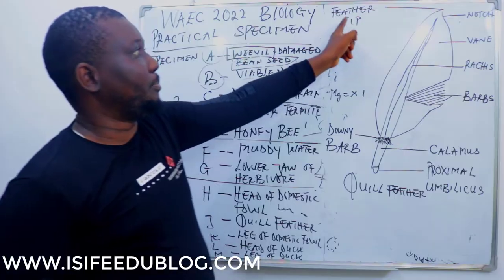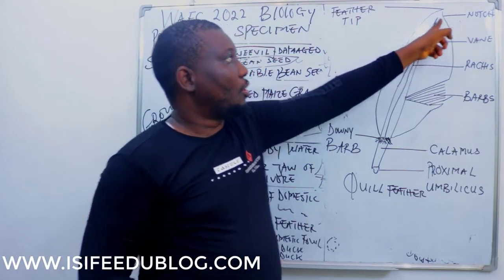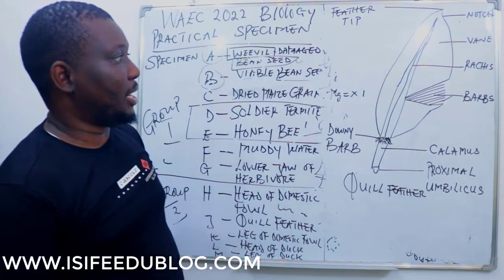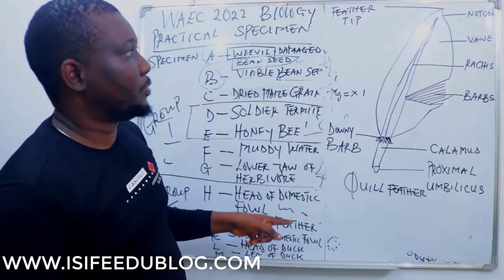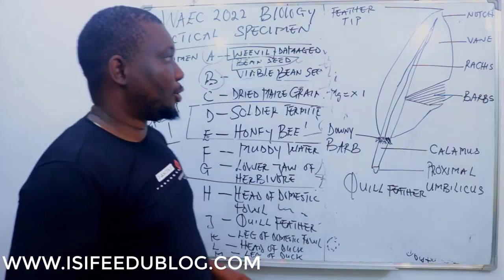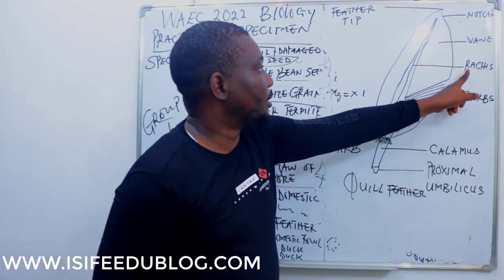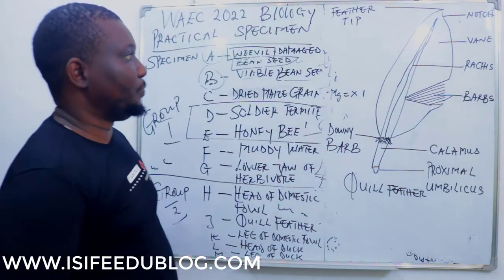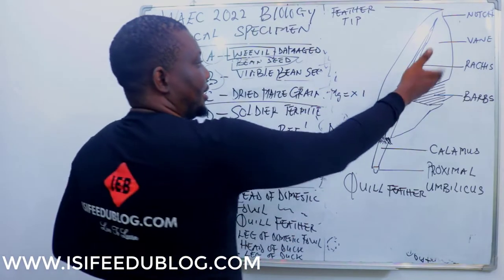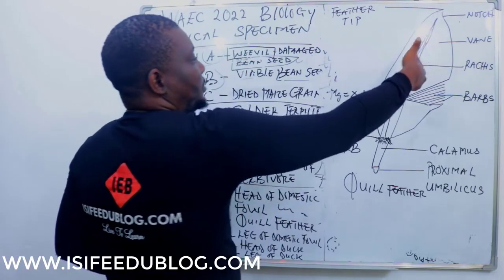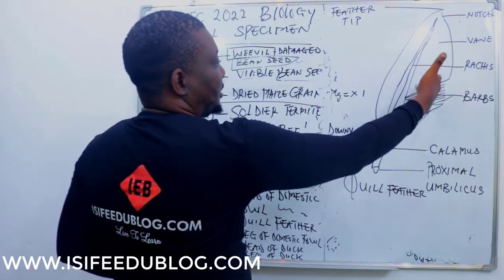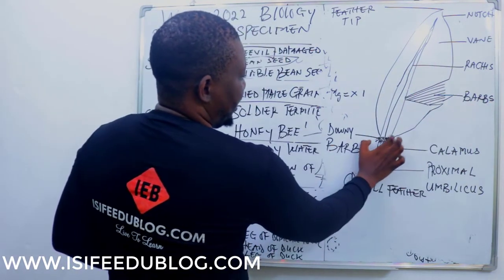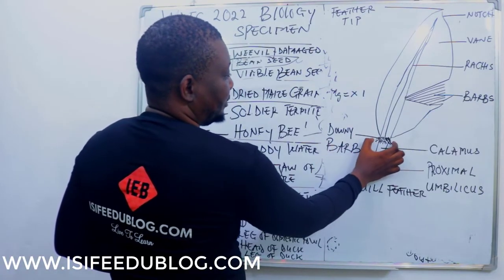The tip is called the feather tip. There is a notch on it through which the vein balances, or the skin of the feather balances. In between the skin of the feather — that is the vein — runs a rachis. The rachis runs in between the vein of the feather, which has several barbs. Barbs can be all over the vein, but for the sake of the diagram you can select a portion where you draw the barbs. The remains of the barbs at the bottom are called downy barbs.